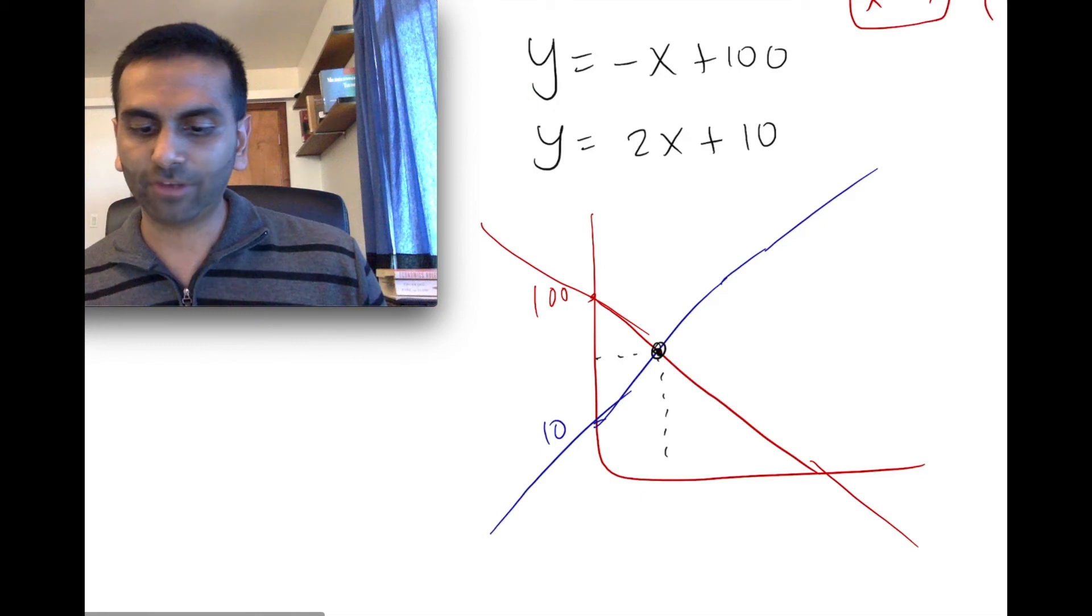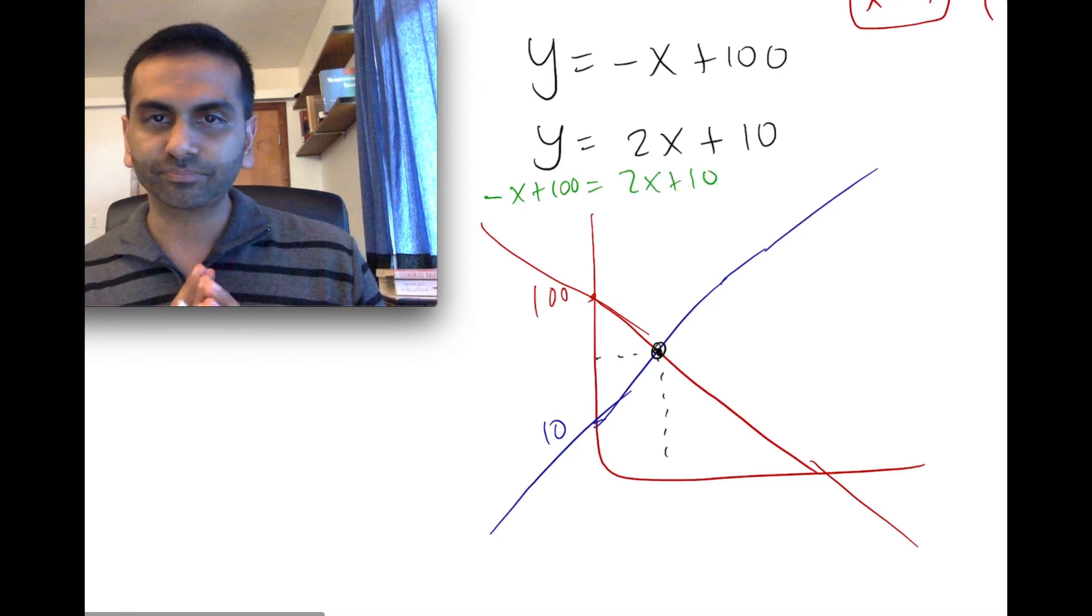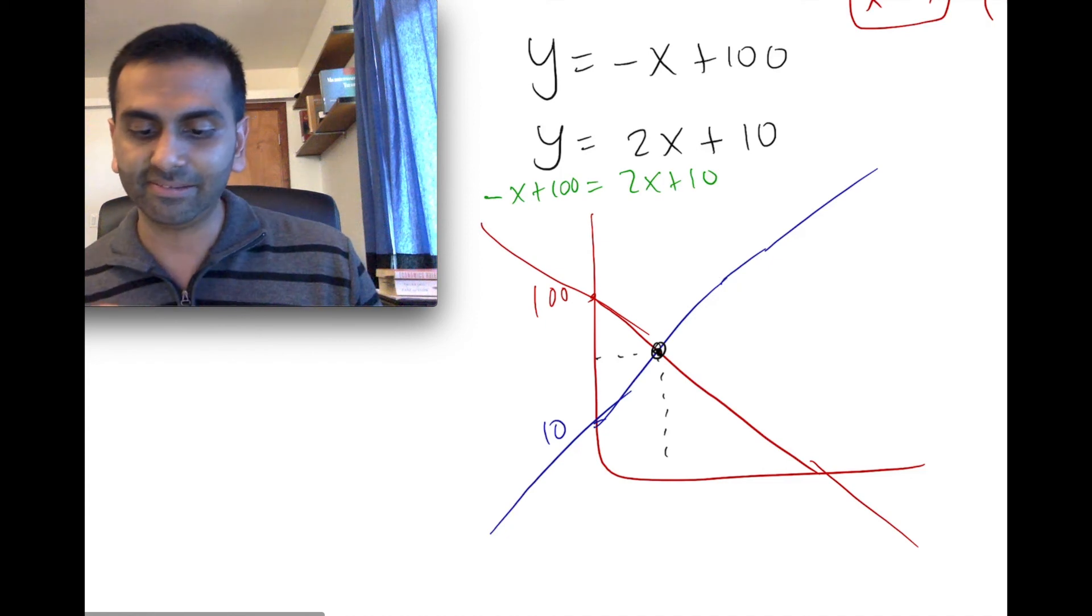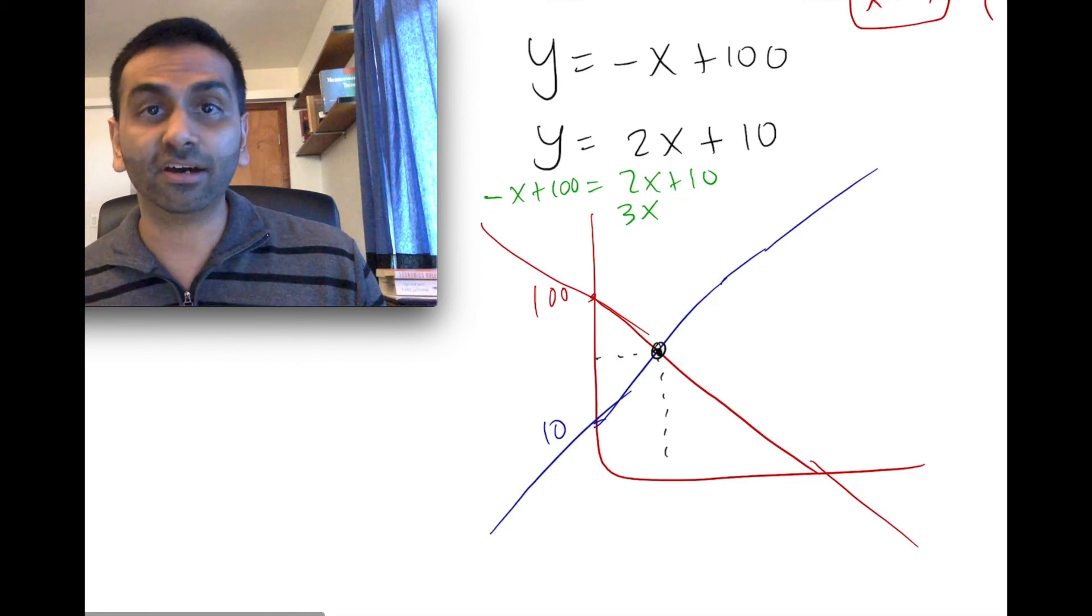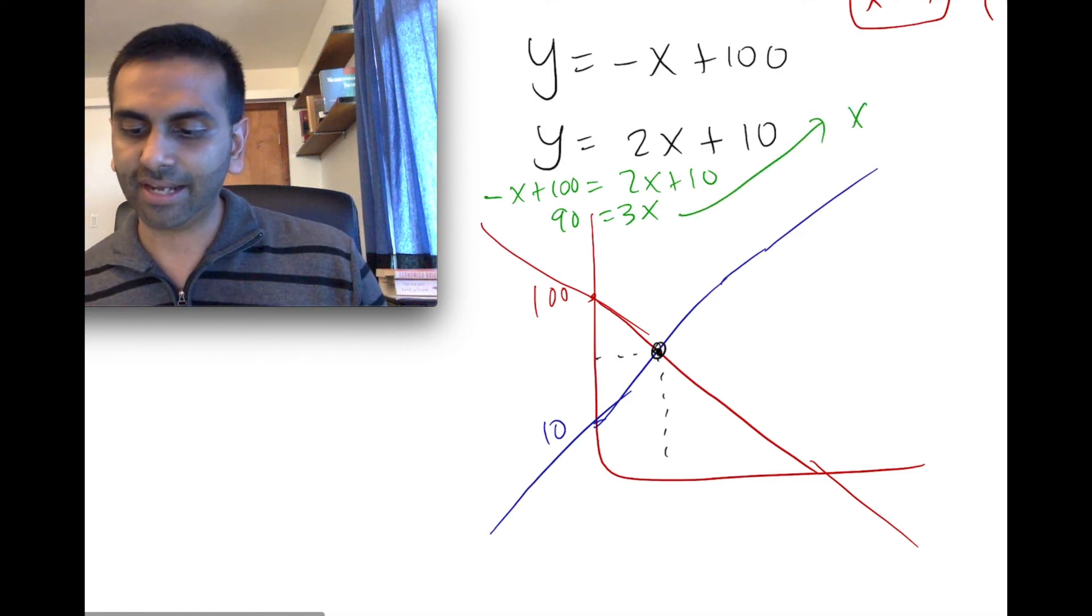But then that equation becomes we've substituted y, y is -x + 100. And then this side, we're just transcribing as is 2x + 10. Alright, solving for this is going to be easier. Add x to both sides, so that's going to be 3x. And subtract 10 from both sides, 100 - 10 is 90. So 90 equals 3x. Divide both sides by 3, you get x equals 30.